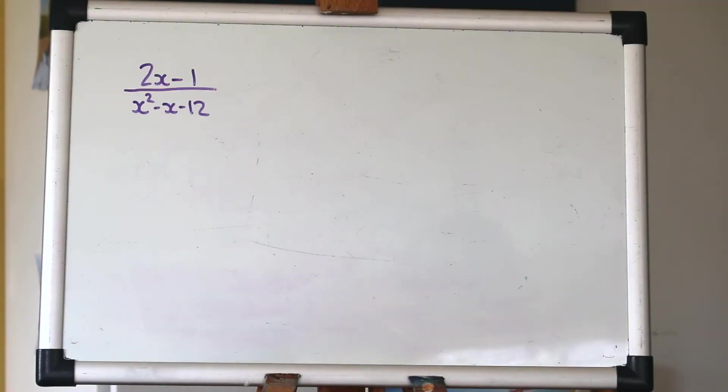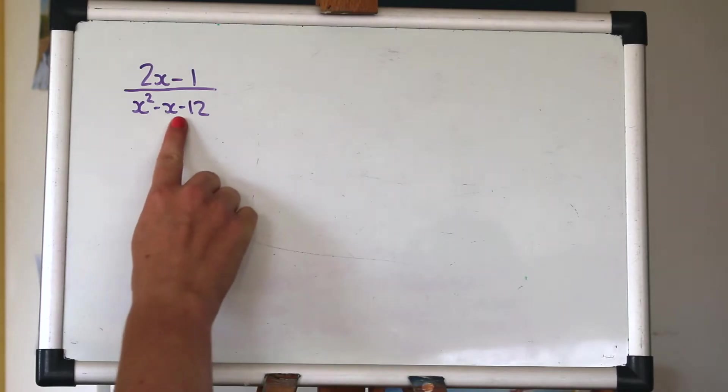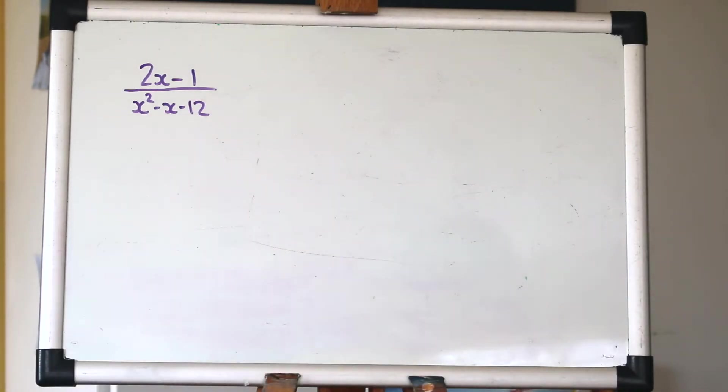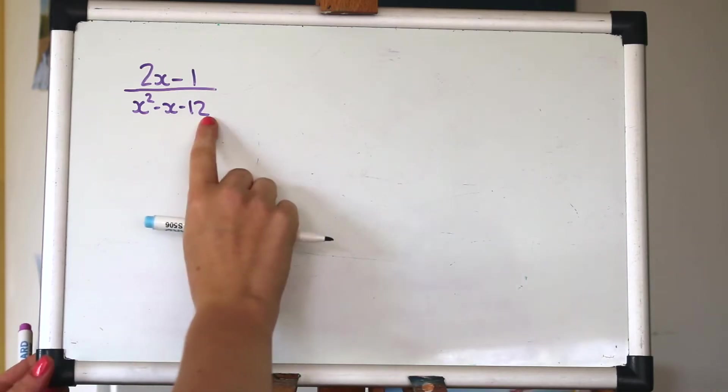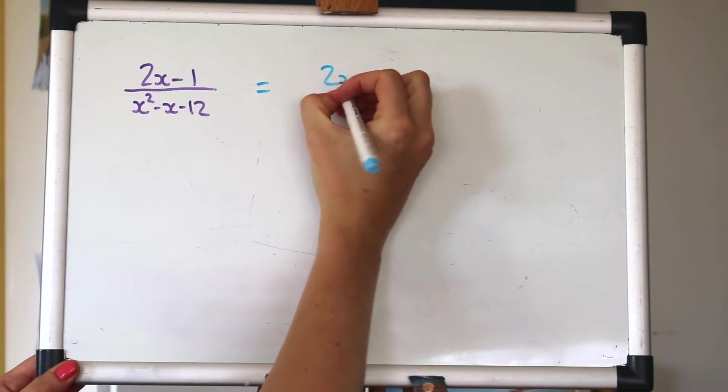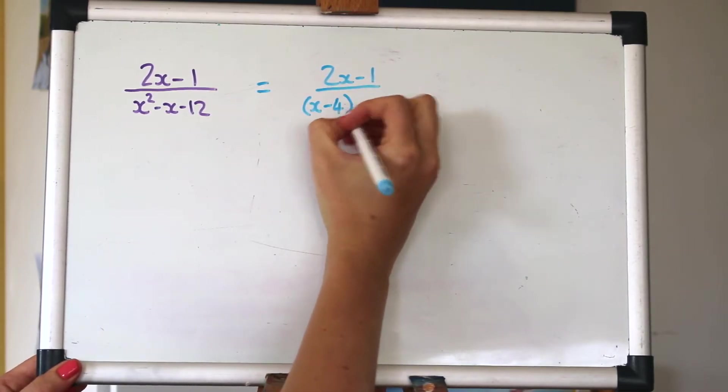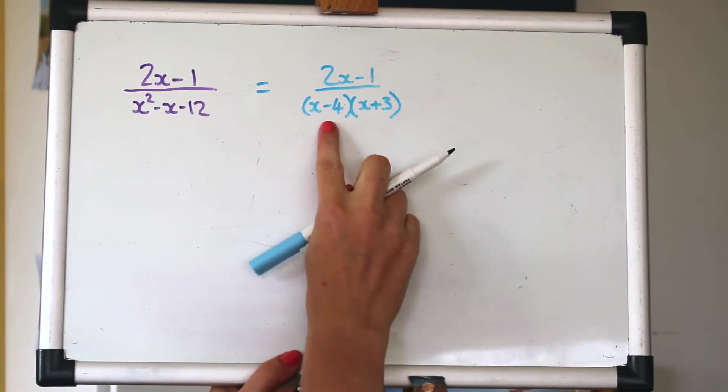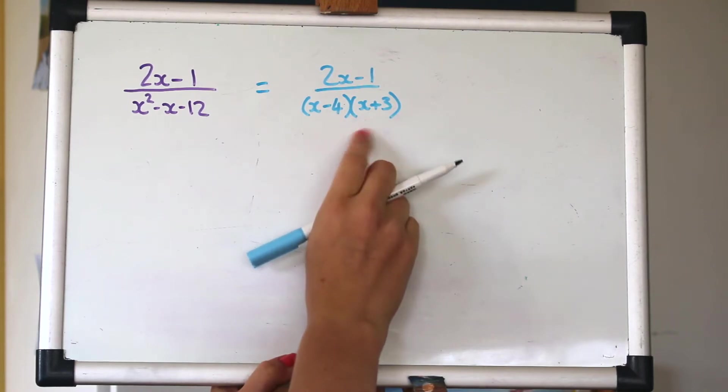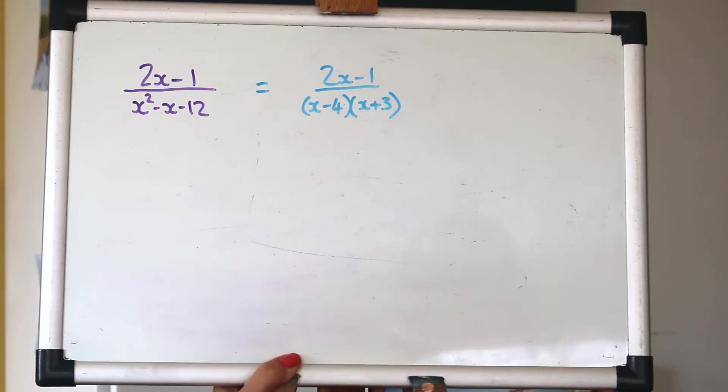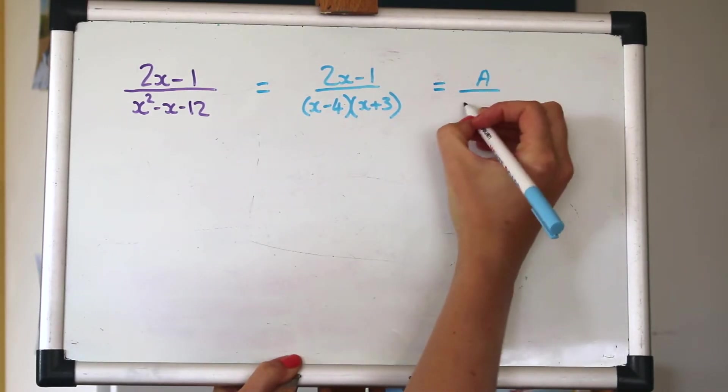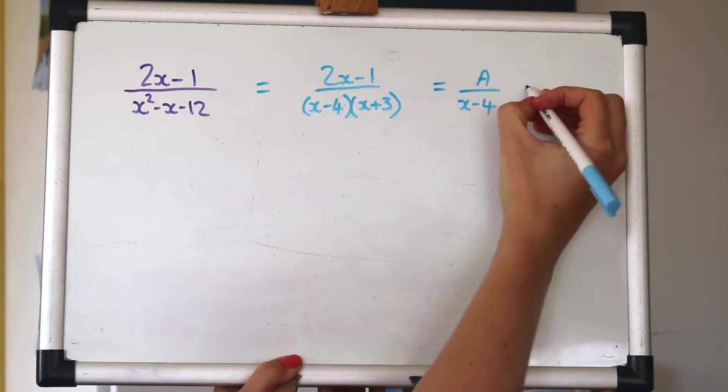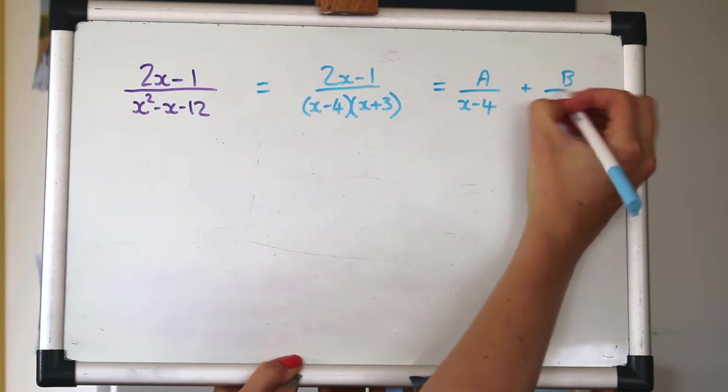So let's start with our first example. Partial fractions is all about splitting up a fraction into some smaller fractions, so we want some factors on the bottom that we can split it up into. That will actually factorise, so let's just do that. So now these are the factors on the bottom and they can be the new denominators for some smaller fractions. So we'll have something on the top of x minus 4 and something on the top of x plus 3.